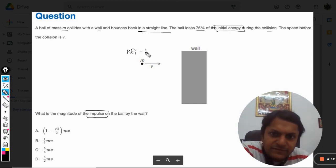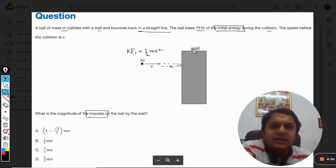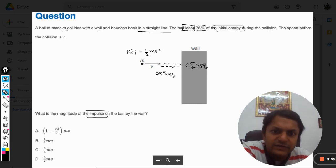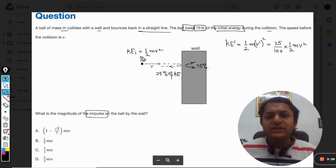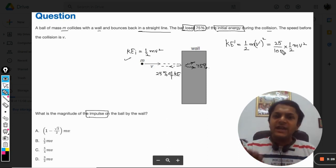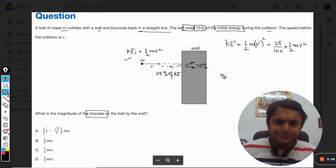So first of all, what is the initial kinetic energy? This is the initial kinetic energy. Now it bounced back from this place like this and 75 percent of energy is lost. So it rebounds with the rest of the energy, that is 25 percent of kinetic energy. So I can say that kinetic energy final, let's say half m v dash square, this will be basically the 25 percent of half m v square because that is the initial kinetic energy.